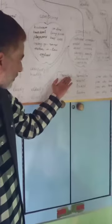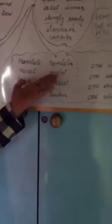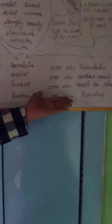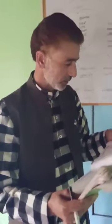Adding the correct endings: 'translate' plus '-or' gives 'translator' — one who translates. 'Novel' plus '-ist' gives 'novelist' — one who authors novels. 'Tour' plus '-ist' gives 'tourist' — one who travels for pleasure. 'Teach' plus '-er' gives 'teacher' — one who teaches. There are some other words in the exercise which you will have to complete on your own.